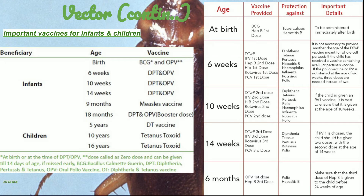As a preventive measure, certain vaccines are given to protect infants and children from specific diseases. At birth, infants are given the BCG vaccine — Bacillus Calmette-Guérin, which protects against tuberculosis — and OPV, the Oral Polio Vaccine.